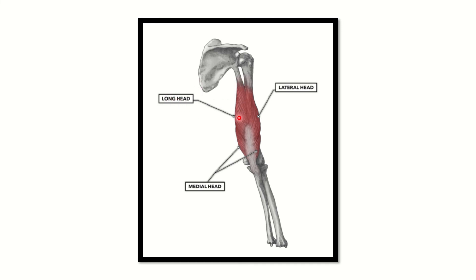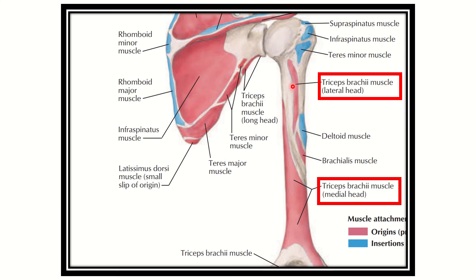The long head of the triceps arises from the infraglenoid tubercle. Here you can see the lateral head, the long head, and another head — the medial head. Triceps means three heads: the long head, lateral head, and medial head.